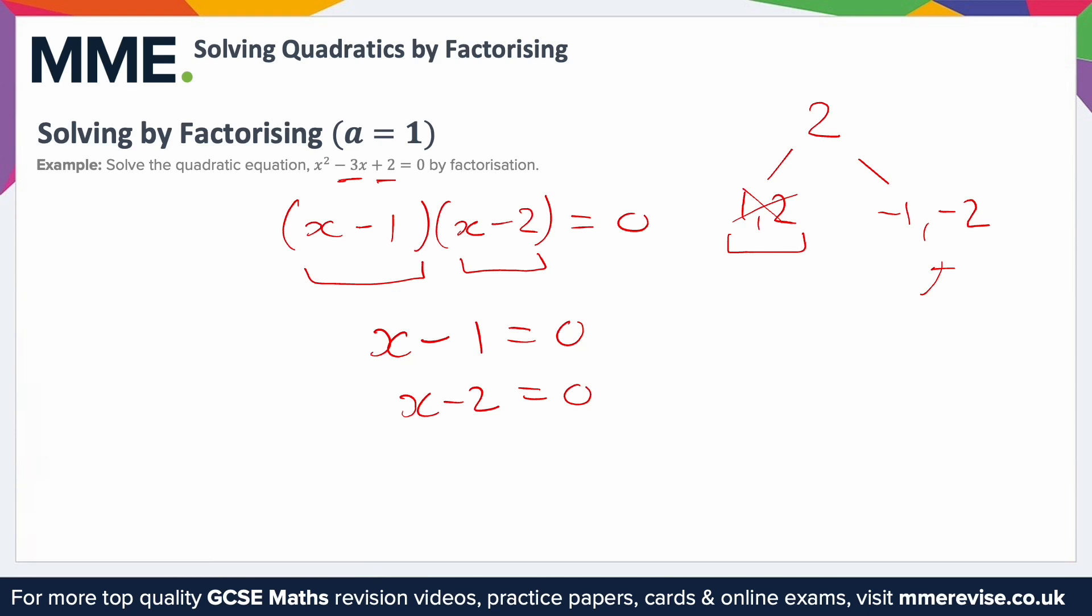From there, you need to figure out what x is in each of these equations. So we've got some number take away 1 gives you 0, so that number must be 1. Similarly for the next one, you've got some number take away 2 gives you 0, so that number must be 2.